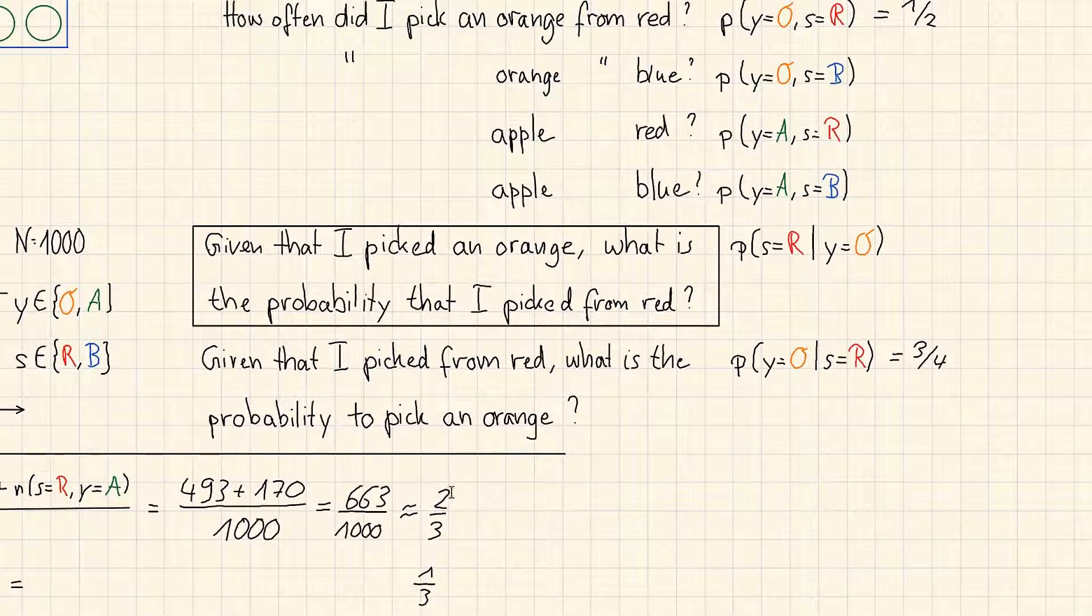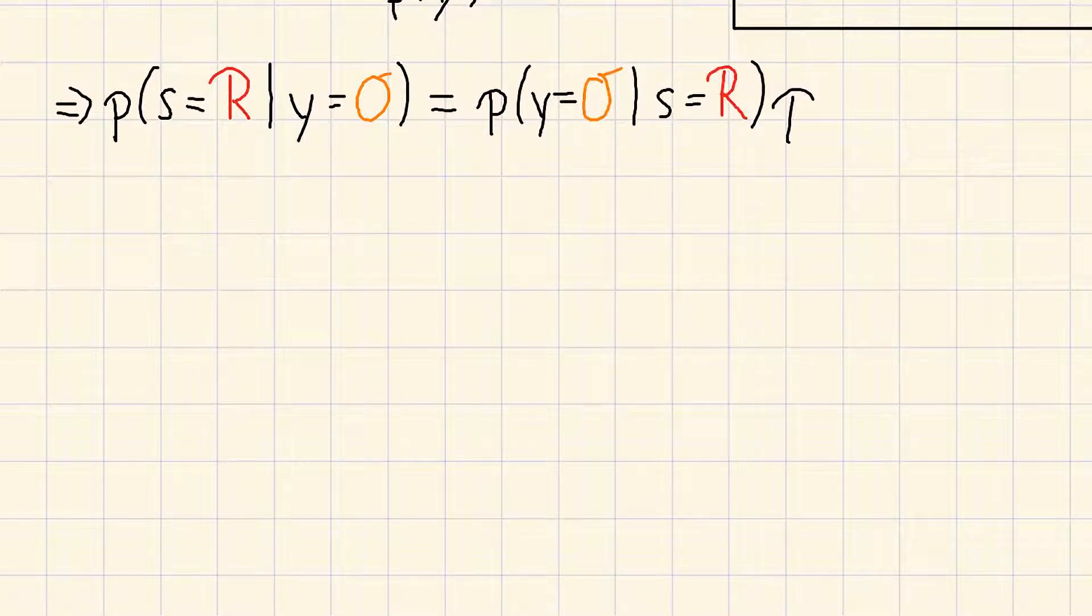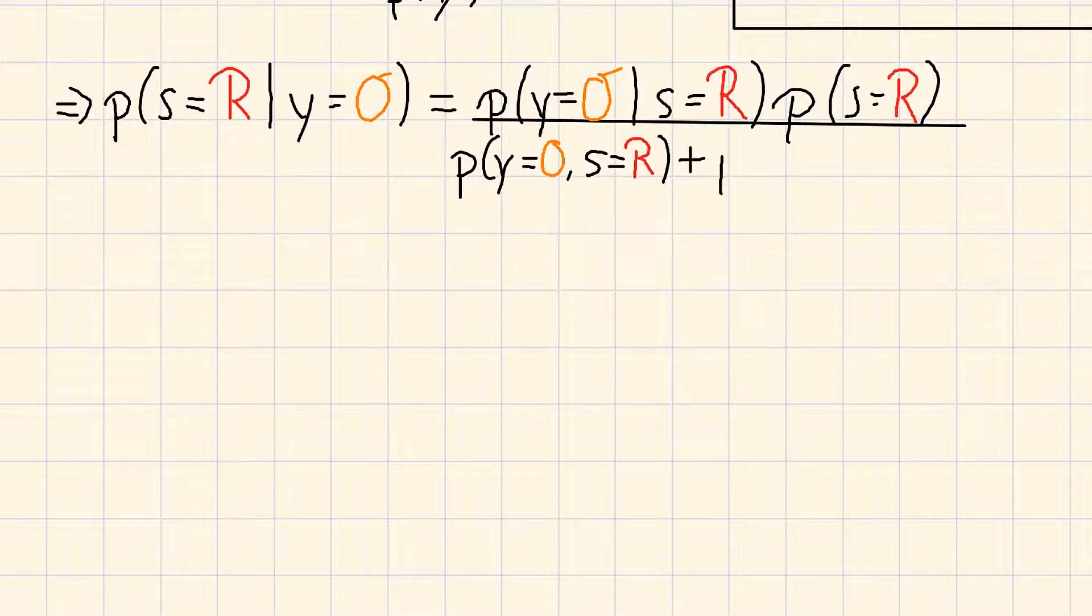When we apply the sum rule here in the denominator, we are getting p of s equal r given y equal o is equal to p of y equal o given s equal r times p of s equal r. And we divide that by now applying the sum rule p of y equal o and s is equal to r plus p of y is equal to o and s is equal to b.